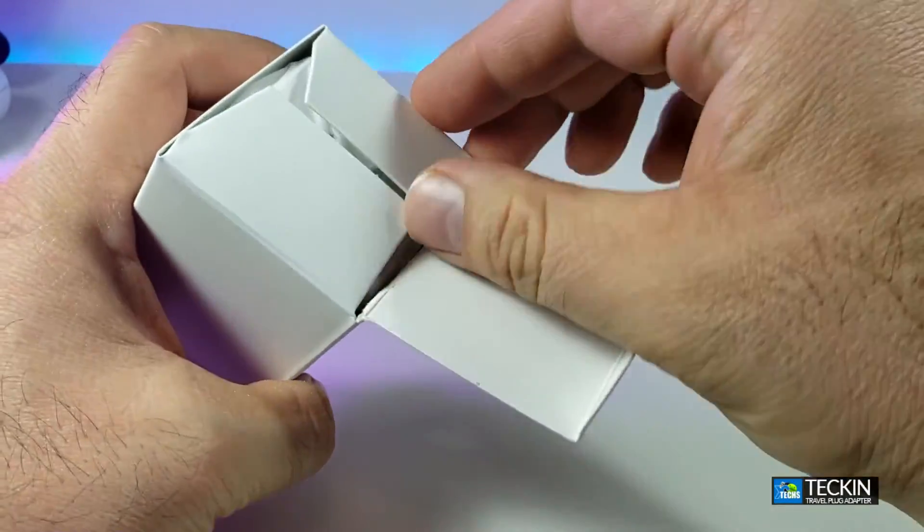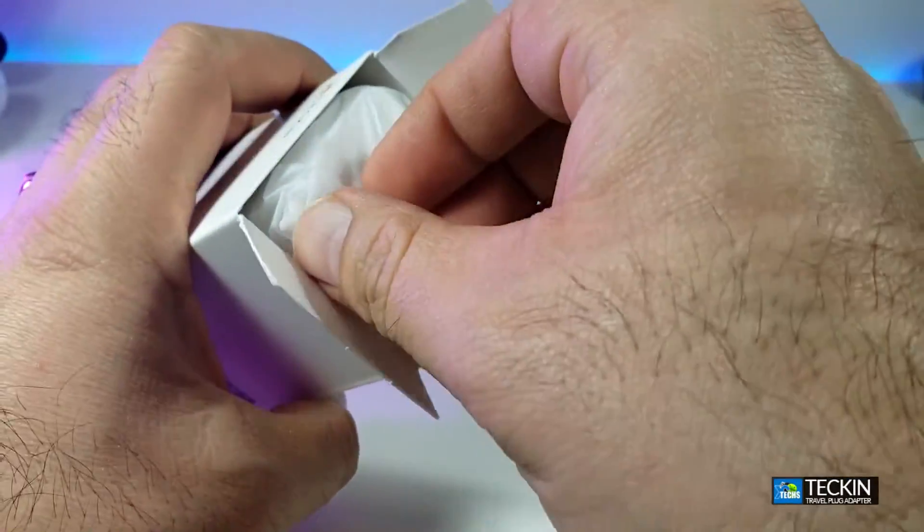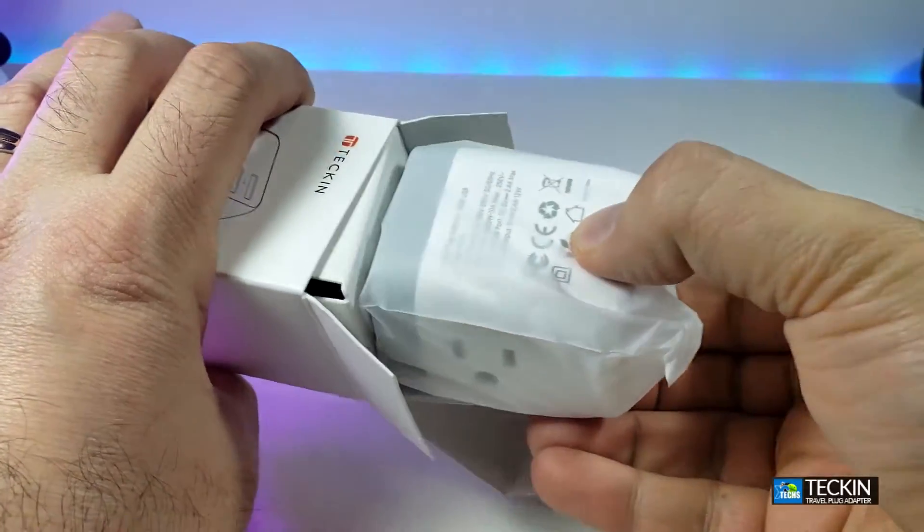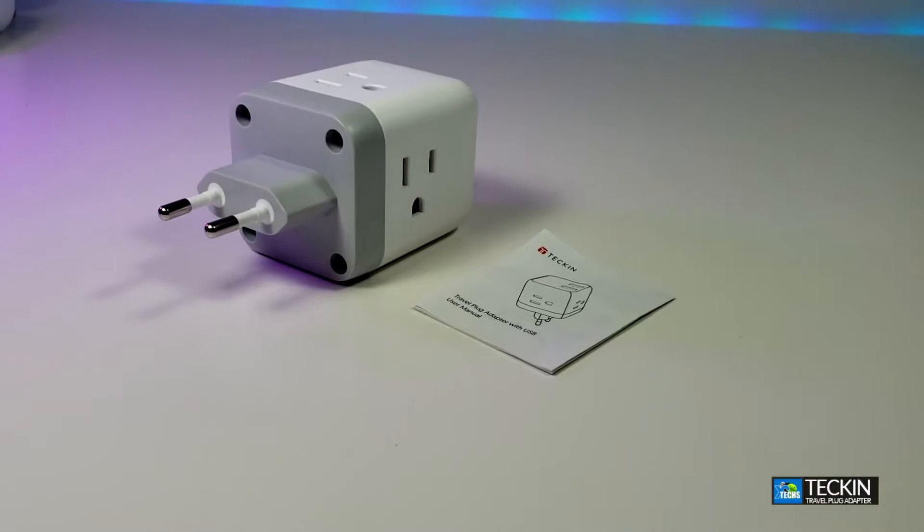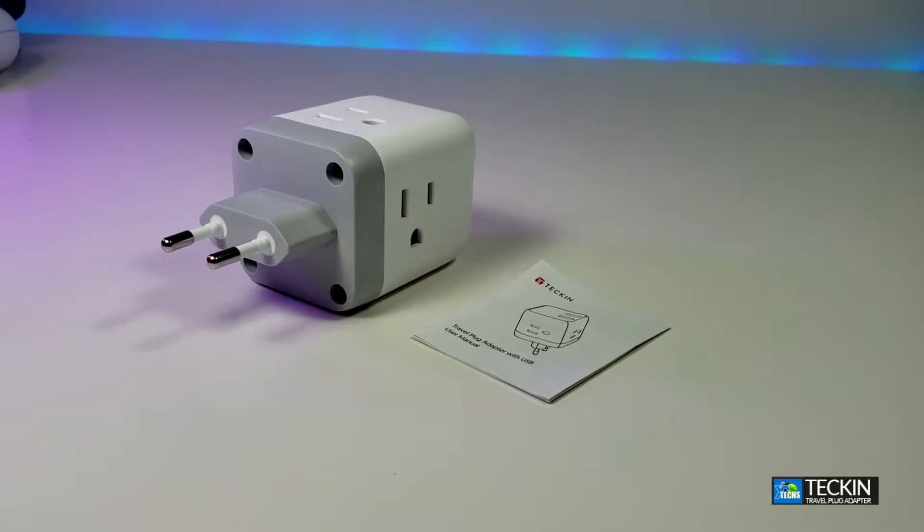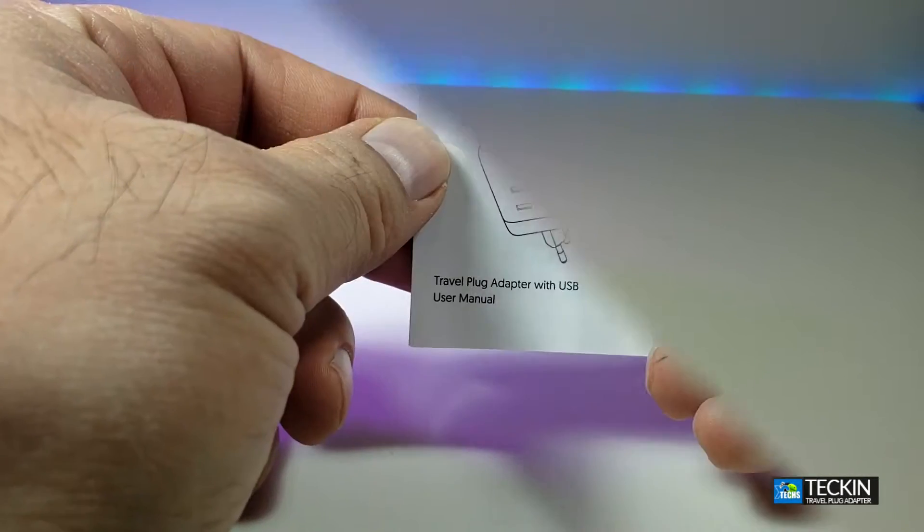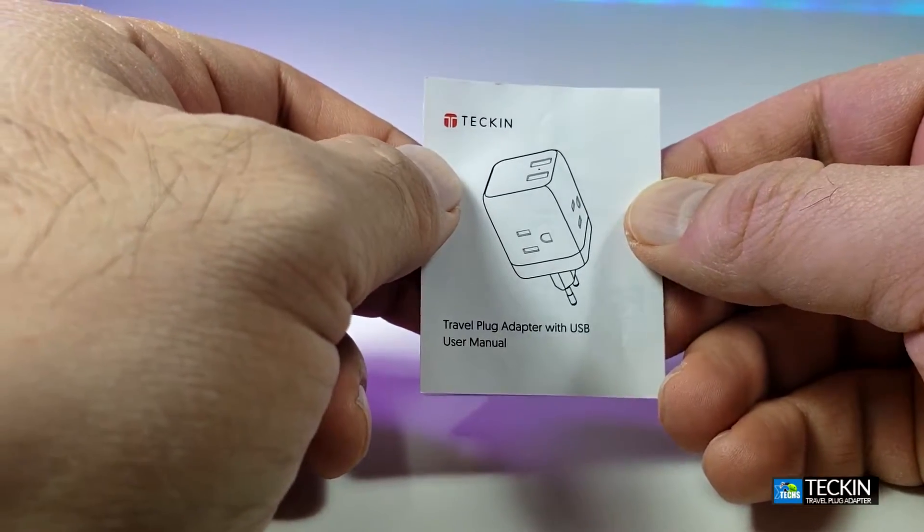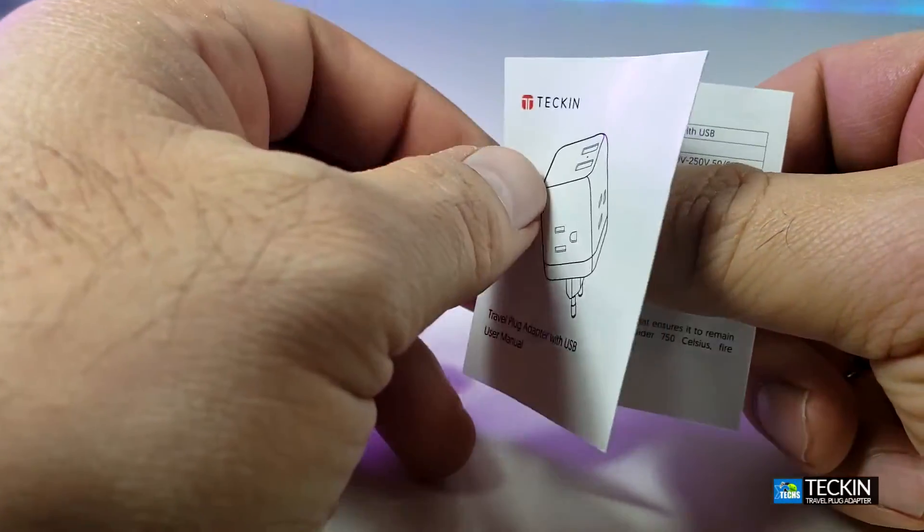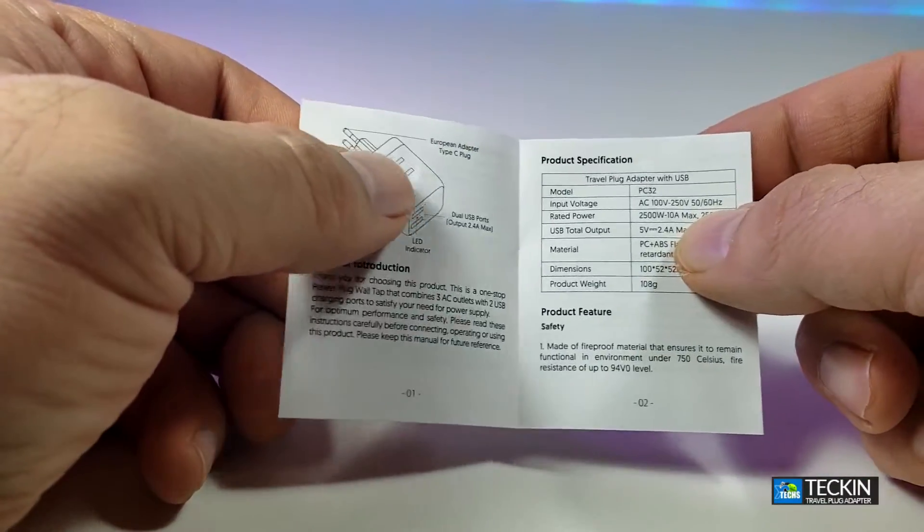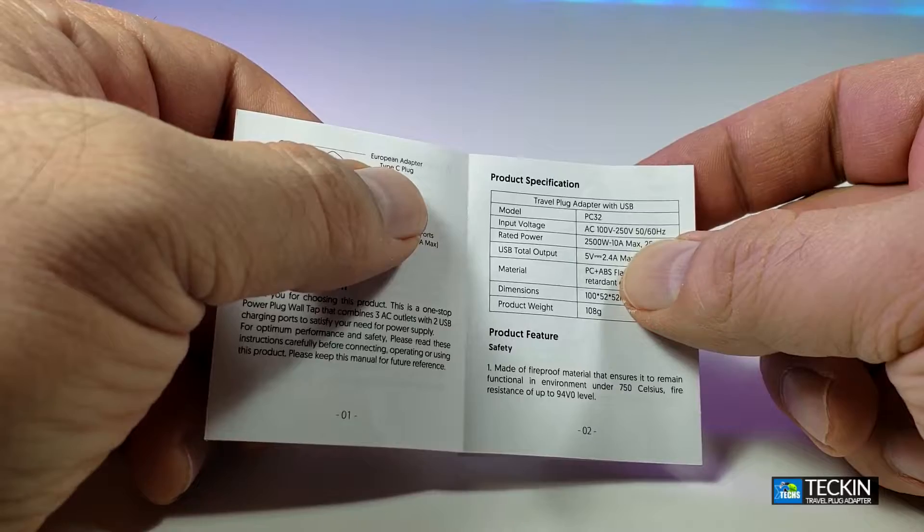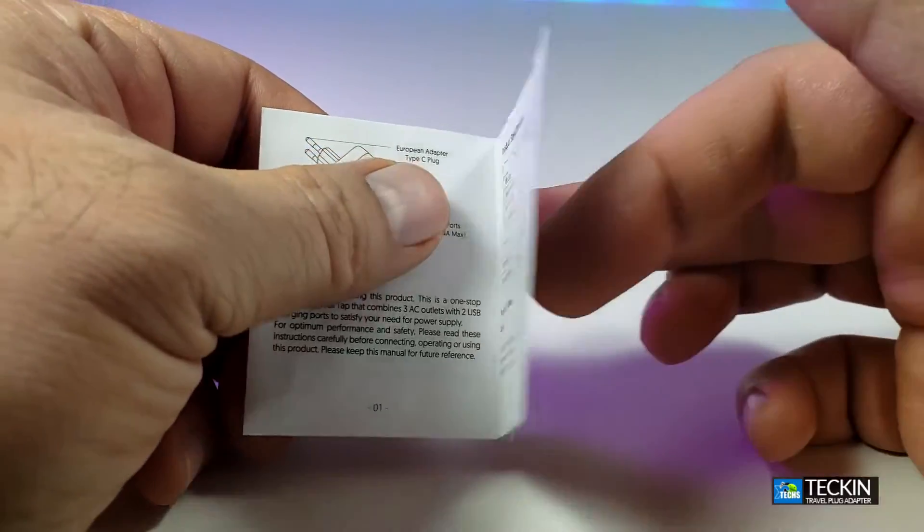Once we open the top and we take everything out, the components that are part of this are the user manual. You can see that it has the picture in the front nicely but it's very small and once you open it, it has some product introduction, then product specifications, and product features, and safety.